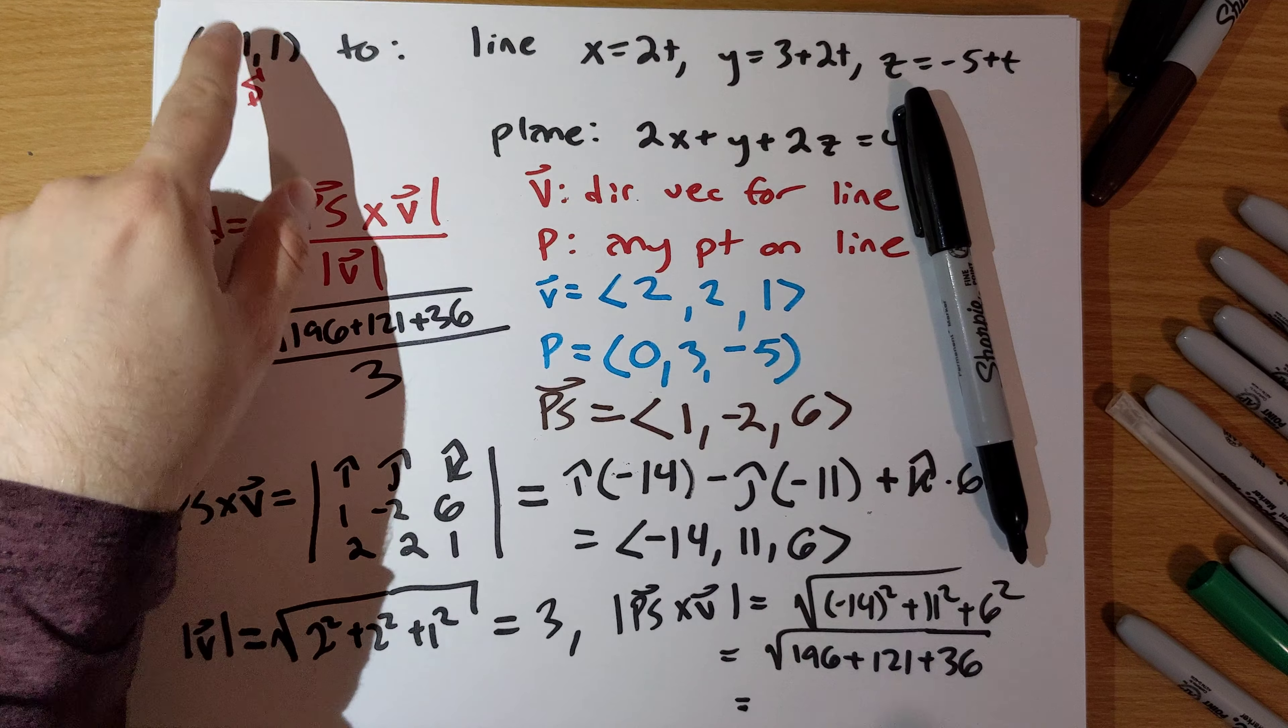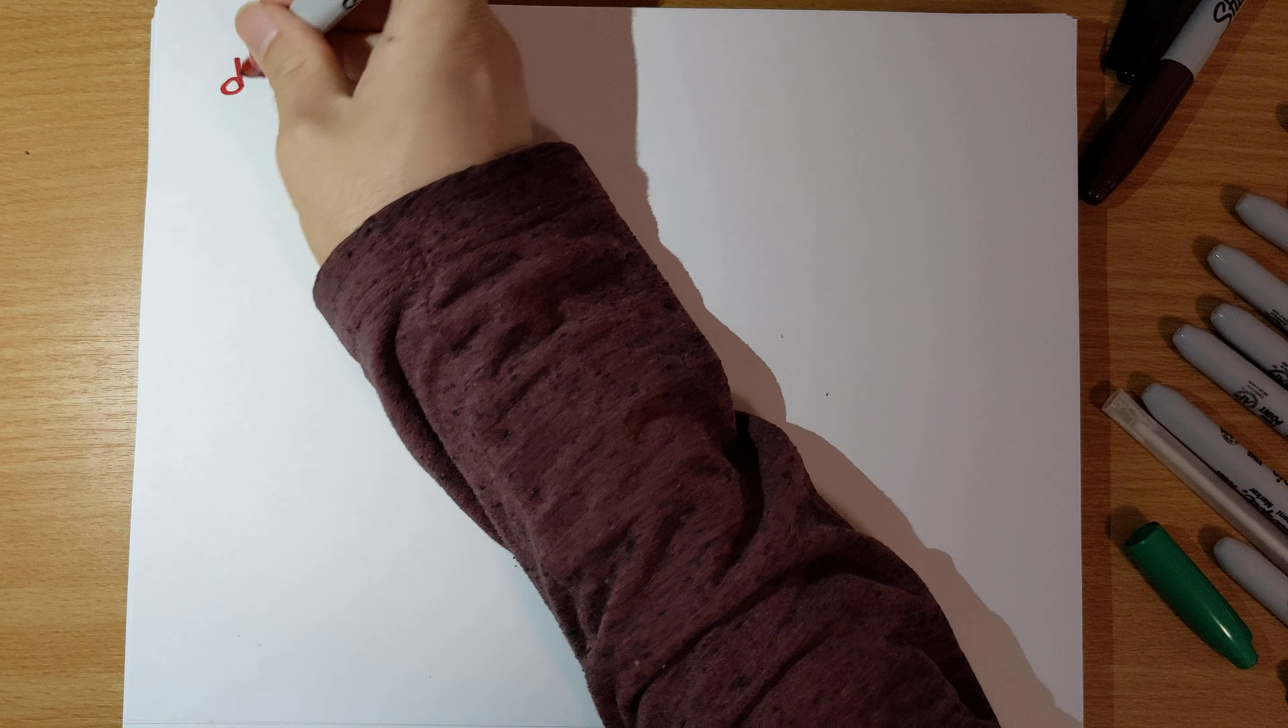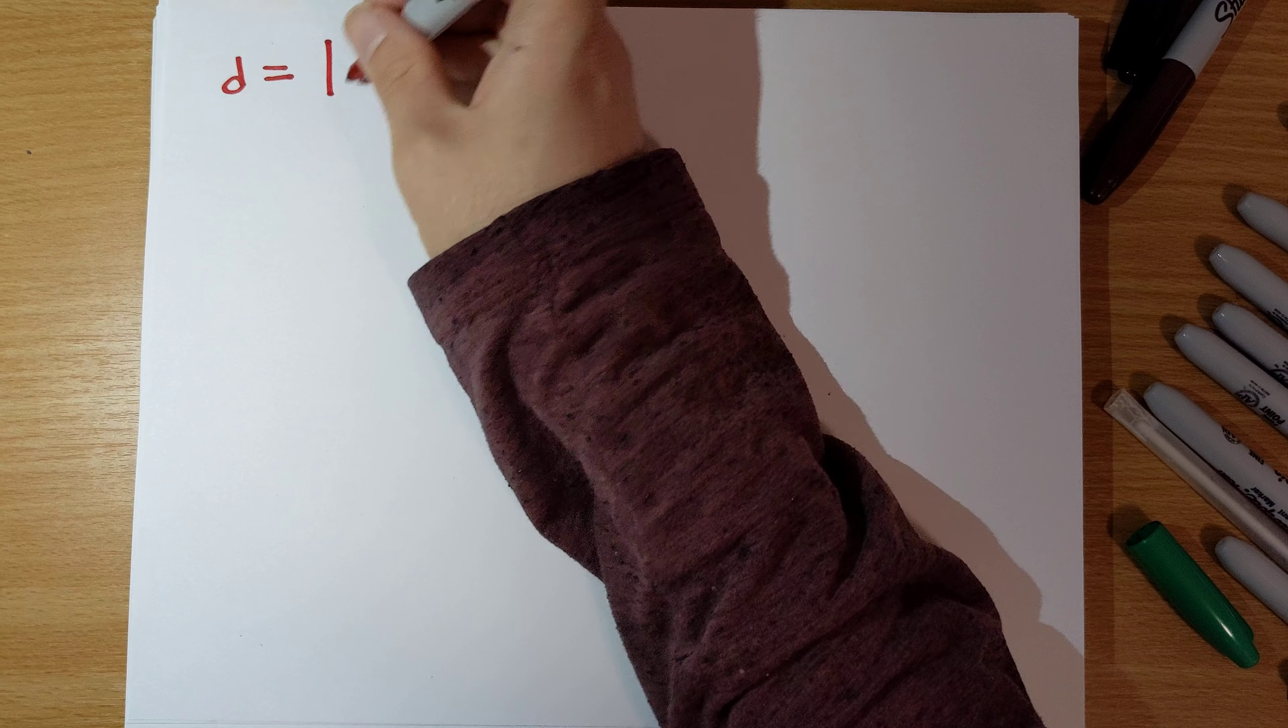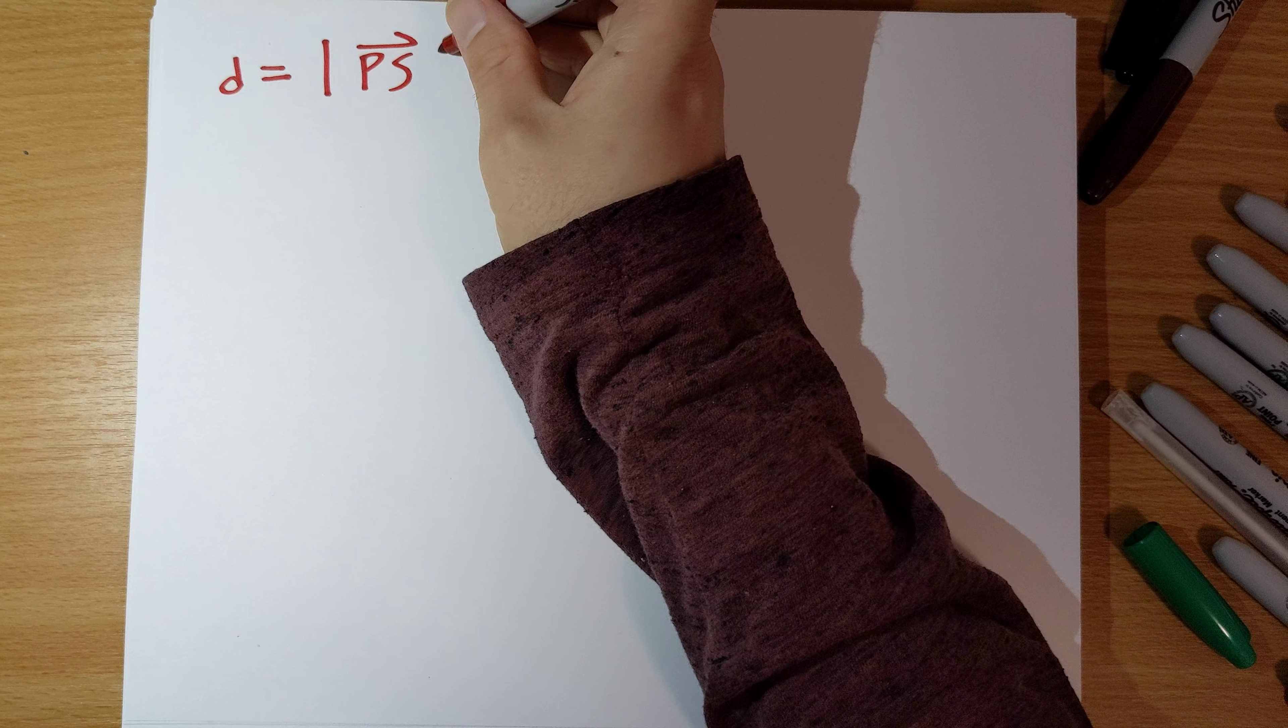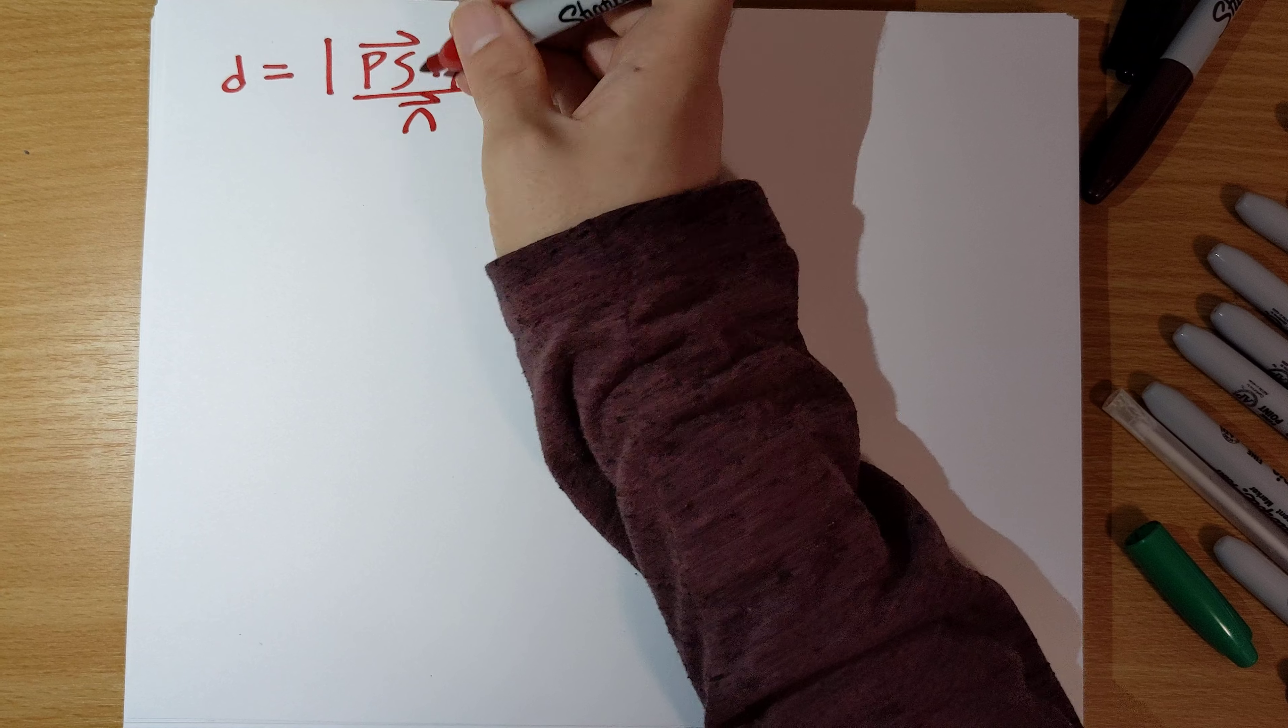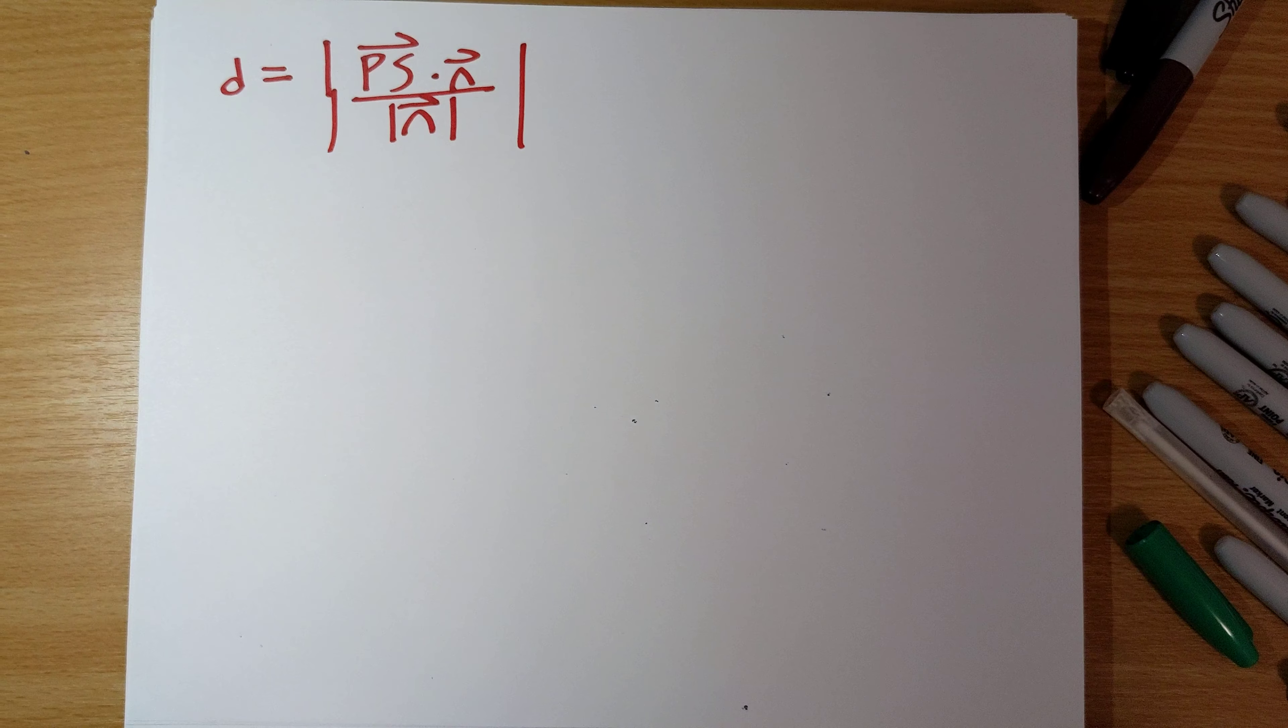Okay, to find the distance from this point to this plane here, there's another formula that we need. And d is equal to, the distance is, the absolute value of PS dot n, all of that, divided by the length of the normal vector.